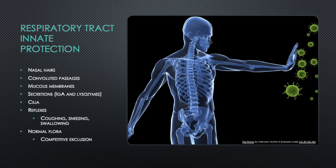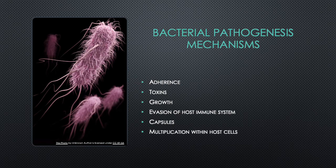Your respiratory tract is designed to protect you against infections. From nasal hairs to convoluted passages, mucous membranes, secretions, cilia, reflexes such as coughing, sneezing and swallowing, and normal flora through competitive exclusion — all work synergistically to keep you healthy. However, bacteria have evolved virulence factors to circumvent these defenses, including adherence mechanisms, toxins that clear normal flora, growth factors, capsules to evade the immune system, and the ability to multiply within host cells.